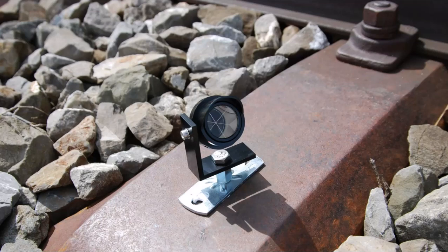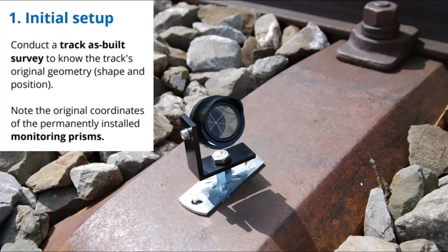The first thing that we might be familiar with in prism monitoring is the actual prism that we use for our monitoring targets. You're still going to be using that, and we're going to be placing it onto strategic spots in our rail site. Once we do that, we need to understand what our initial setup looks like. We conduct a track as-built survey to know the track's original geometry — how the track is originally shaped and positioned.